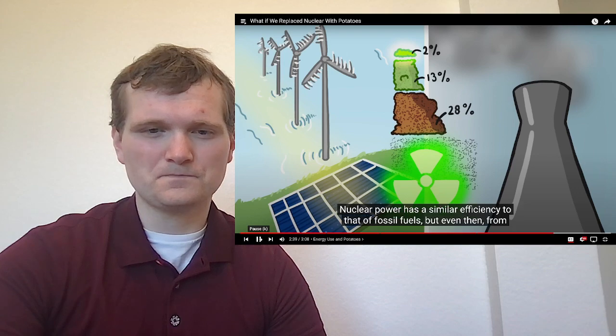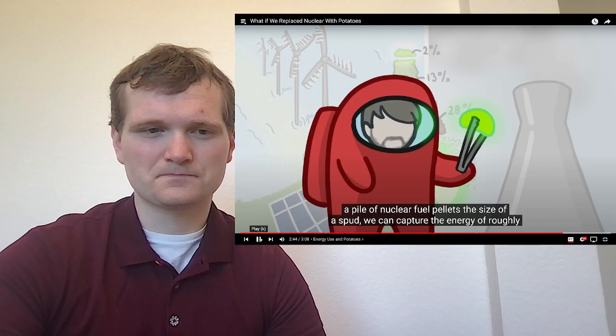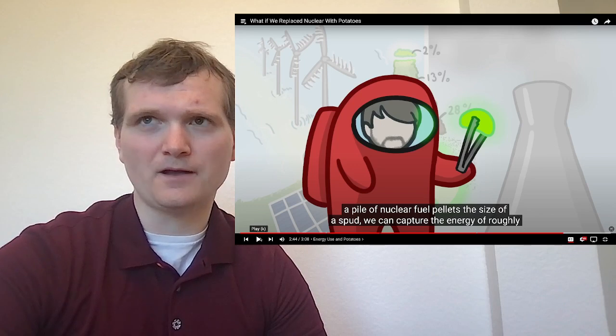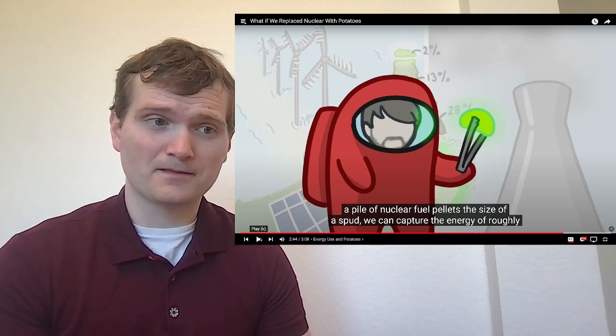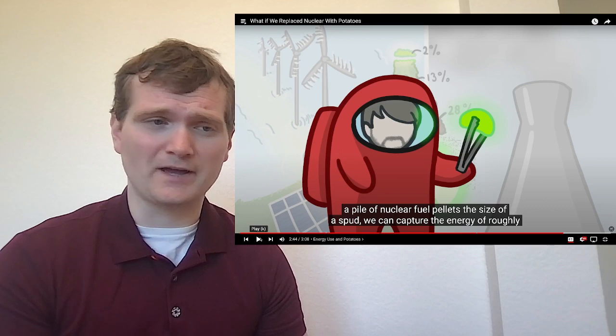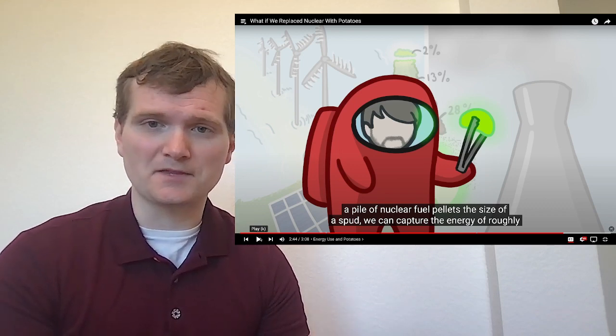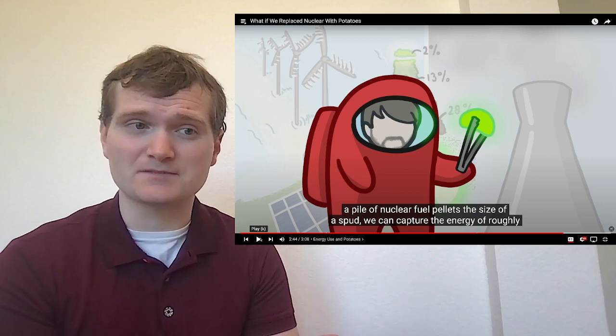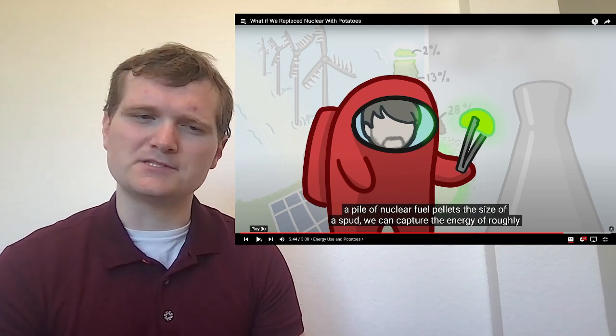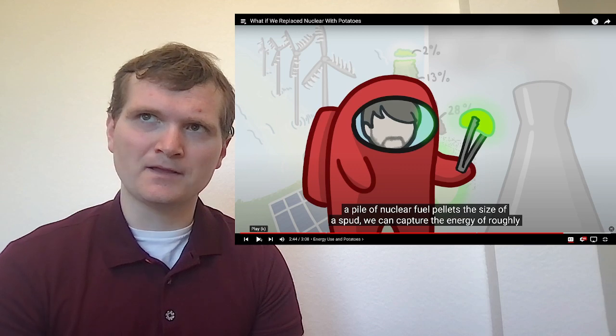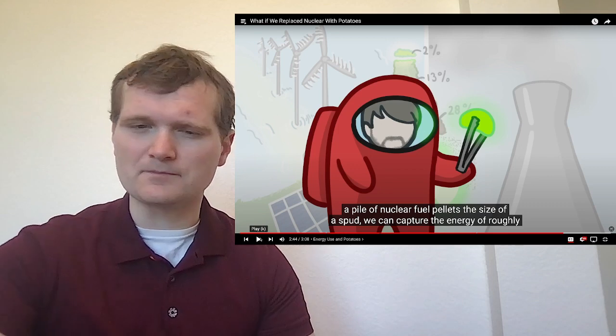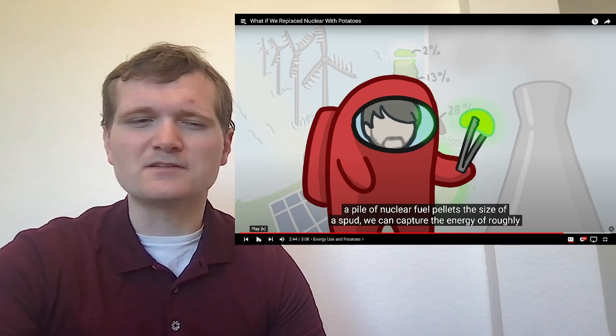Nuclear power has a similar efficiency to that of fossil fuels, but even then, from a pile of nuclear fuel pellets the size of - Nuclear fuel pellets are not green in fuel. When they're in fuel, the uranium oxide pellets are actually black little things about the - They look about like little pencil lids, if you will, and they're about the same size when they're all rolled up into fuel assemblies. And natural uranium is actually - looks like yellow cake, hence the term yellow cake uranium. No idea where the green stuff's coming from.